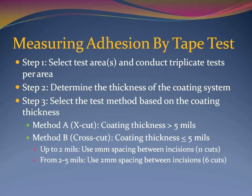Before you test the adhesion of the coating system using this procedure, you will need to determine how thick the coating system is. This will enable you to select a testing method. Method A is called an X-cut and is used to test the adhesion of a coating system that is greater than 5 mils thick. Method B is called a cross-cut and is used to test a coating system that is less than or equal to 5 mils thick. If Method B is selected, the spacing between the incisions varies depending on the coating thickness. If the coating is less than 2 mils thick, the cuts are spaced 1 millimeter apart and 11 incisions are made. If the coating is between 2 and 5 mils thick, the cuts are spaced 2 millimeters apart and 6 incisions are made.